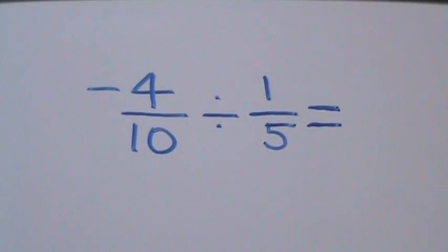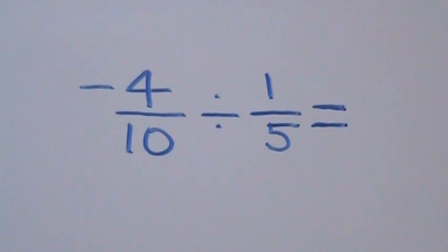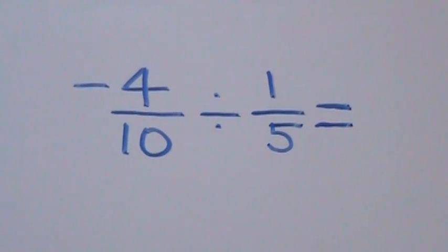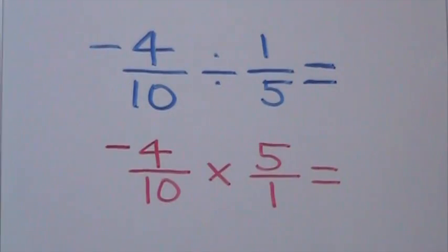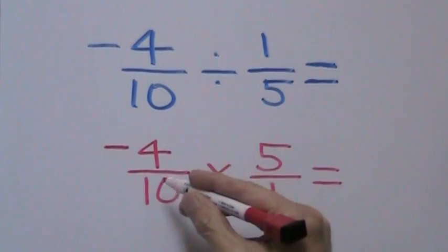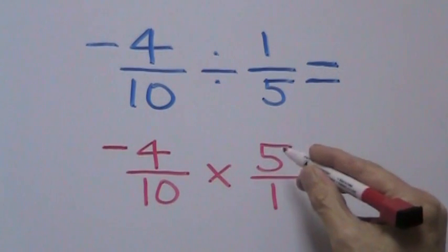Since there is no real division of fractions, we have to first rewrite the problem as a multiplication problem and flip the second fraction. Let's go ahead and do that. Now we've rewritten our problem: negative 4 tenths times 5 over 1.